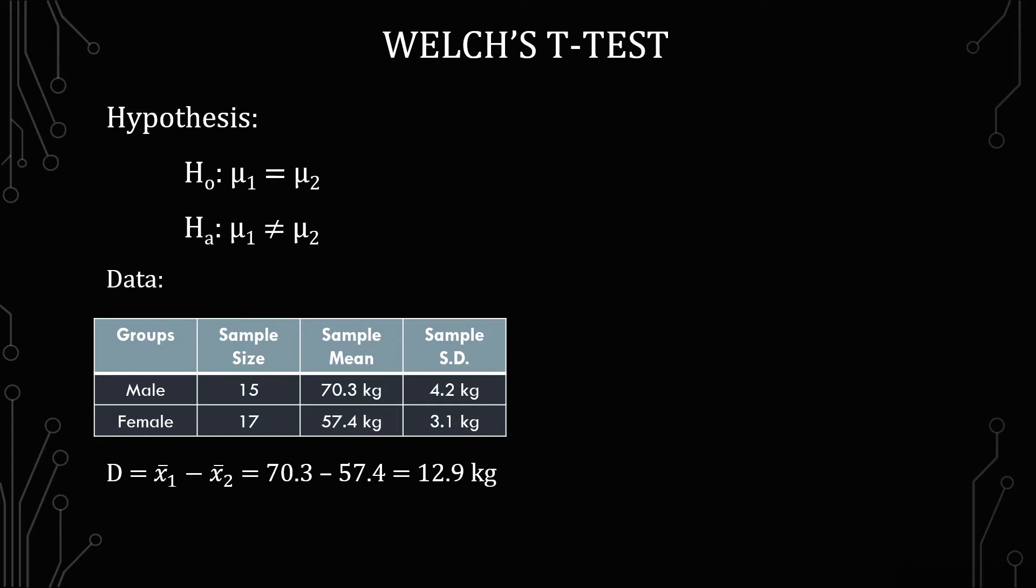So we're going to go with a fairly simple problem here. I've done a lot of the calculations for you just so we can get into the method itself because some of the calculations do look a little intimidating. The hypothesis is going to be the null hypothesis μ1 equals μ2 and the alternative is μ1 does not equal μ2.